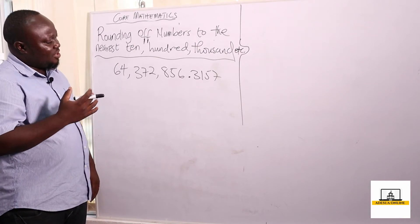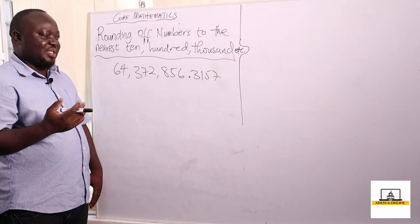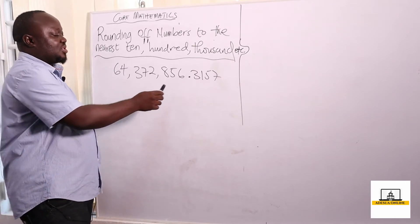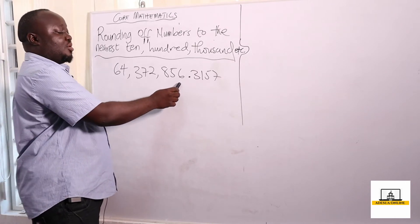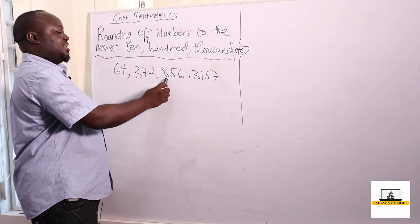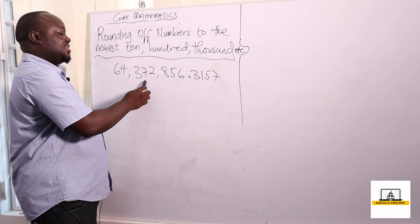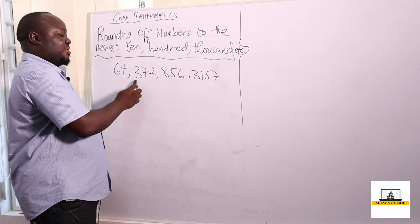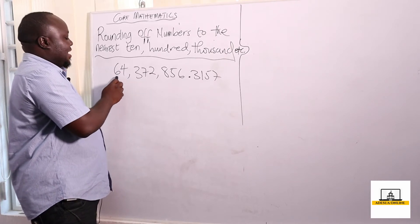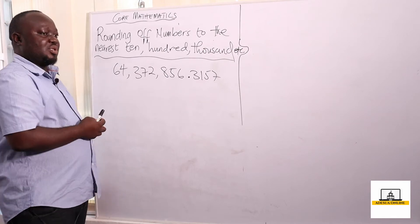To remind you of what you did in primary school: the place values are called units or ones, tens, hundreds, thousands, ten thousands, hundred thousands, million, ten million, hundred million, and so on and so forth.